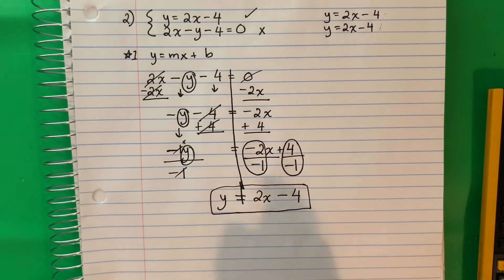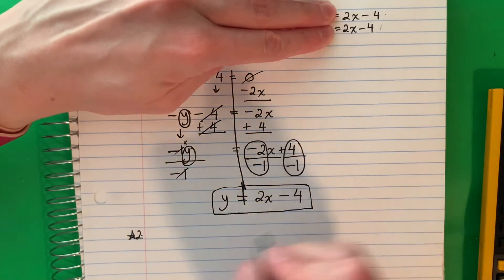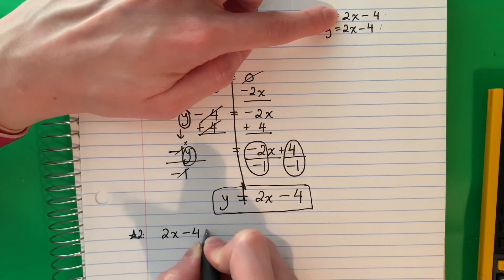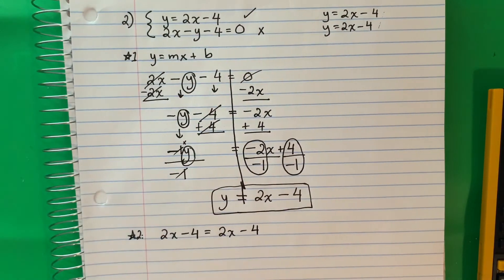And I will copy that over here too. What do you see? They're the same, right? Let's see what happens. So step 2, I will put them equal. So 2x minus 4 equals 2x minus 4.